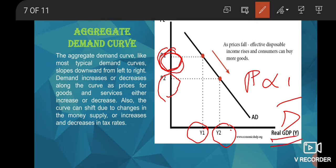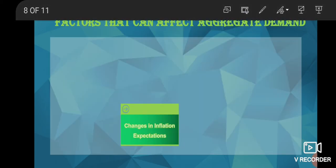The price is inversely proportional to the demand or inversely proportional to the annual income. The aggregate demand curve, like most typical demand curves, slopes from left to right. Demand decreases or increases along the curve as the prices for goods and services either increase or decrease. Also, the curve may shift with changes in money supply or increases in taxes.